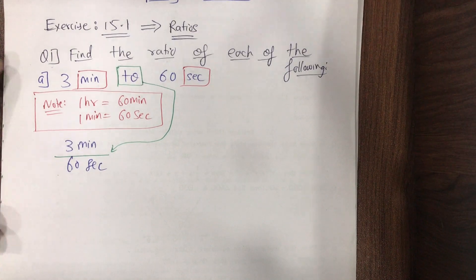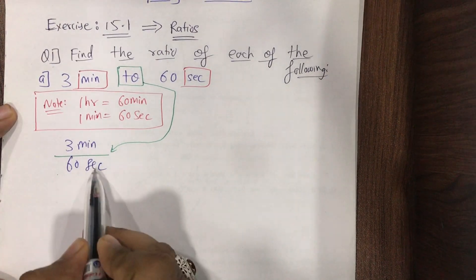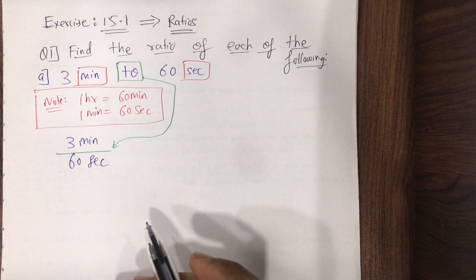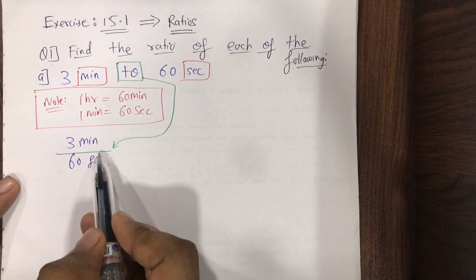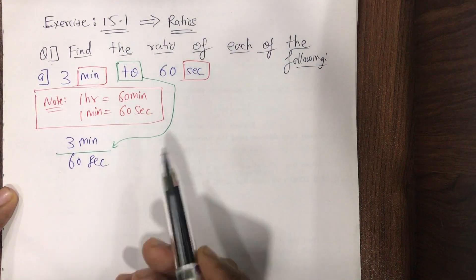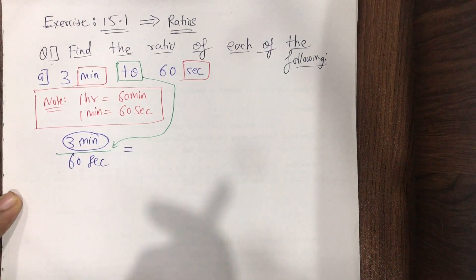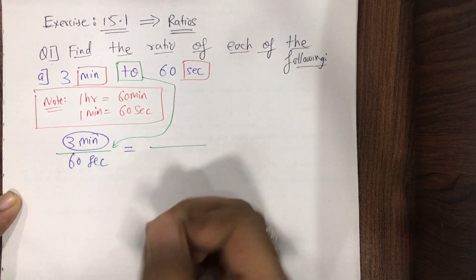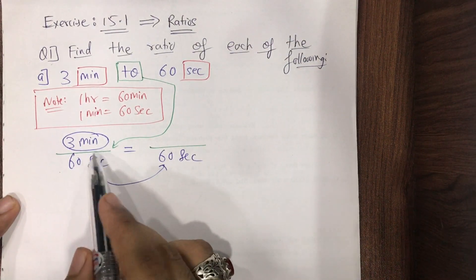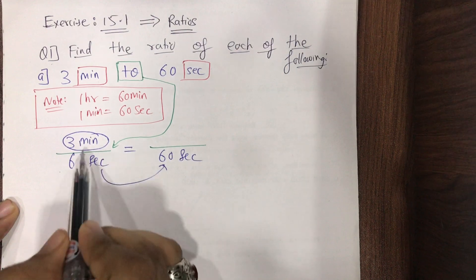The doubt that will come to your mind: should we convert minutes to seconds, or seconds to minutes? My answer is: always convert to the smallest unit. From minutes and seconds, seconds are the smallest. So I will convert 3 minutes. I keep 60 seconds as it is in the denominator, because I've decided to convert both into seconds.